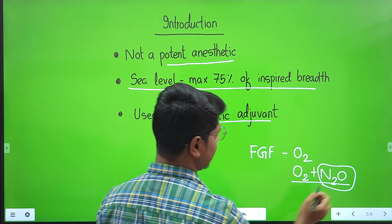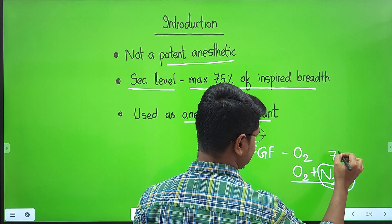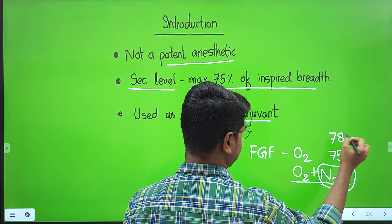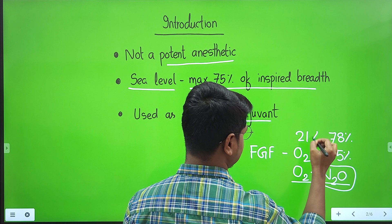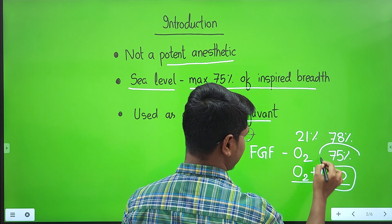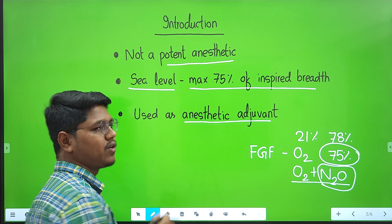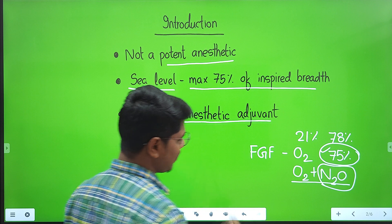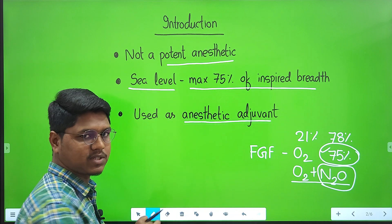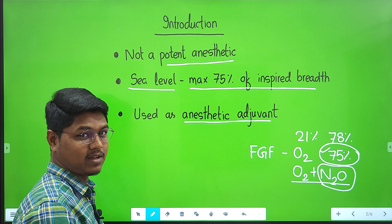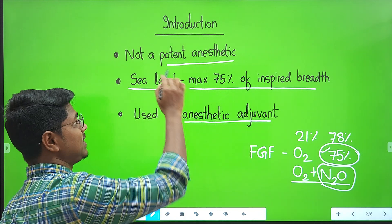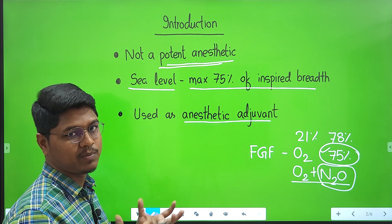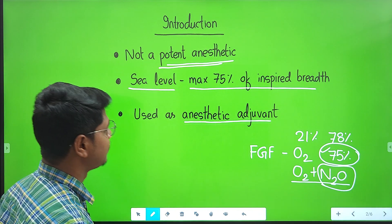The maximum concentration of nitrous oxide should be 75%. In air, the nitrogen concentration is 78% and oxygen is 21%, so maximum you can give is 75%. At higher altitude, this concentration will fall. The MAC value for nitrous oxide is 200%. You cannot supply 200% of nitrous oxide — there would be no oxygen and the animal would go into hypoxia.